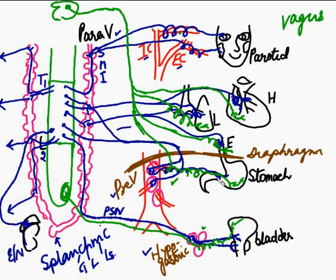All the plexuses encountered in the thoracic, abdominal, and pelvic regions are combinations of sympathetic and parasympathetic. The sympathetic is postganglionic in these plexuses, while the parasympathetic is preganglionic because the synapse occurs in the walls of the organs. This is very important to remember.